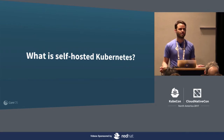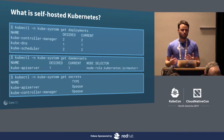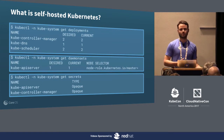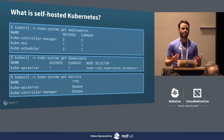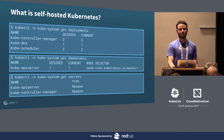So first, to get everyone on the same page, I want to talk about what self-hosted Kubernetes is. It's somewhat self-evident, but it's Kubernetes running on Kubernetes. Specifically, all of the Kubernetes control plane components are running as native Kubernetes objects, namely deployments and daemon sets. They're using things like secrets. And that's about it in terms of what it actually is, but of course, the devil's in the details.